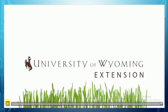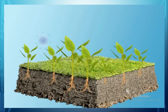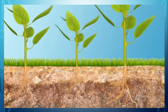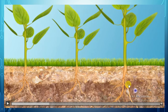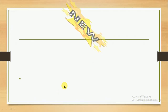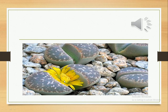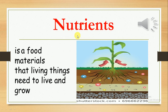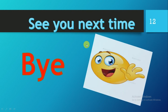Let's watch this nice video to know more about nutrients. As you can see, those are nutrients — plants take nutrients from the soil. Now, word time! Do you remember this plant? It's living stones — we call it lithops. And those are food materials that living things need to live and grow, which the plant takes from soil — those are nutrients. Thanks for watching! See you next time inshallah, bye!